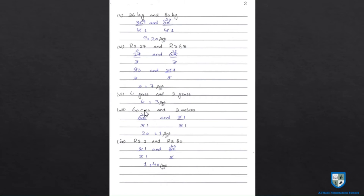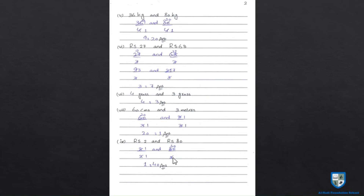Part 8: 60 cm and 3 meters. 3 के table से simplify हो सकता है — 3 को 20 से multiply करें तो 60, and 3 1s are 3. 20 is to 1 — simplest ratio है 60 और 3 की, क्योंकि एक side पर 1 है तो इसे simplify नहीं कर सकते. Part 9: रूपीज 2 and रूपीज 80. 2 by 2 and 80 by 2 — 1 and 40. 1 is to 40 is the most simplest form of 2 and 80.